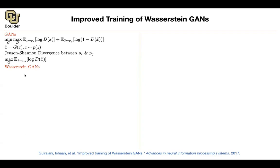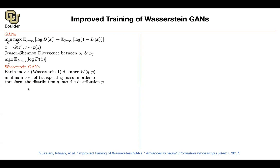This was the Wasserstein GAN. We know it was related to the earth mover distance. The intuition for the earth mover distance, and where the name comes from, is that you are transporting mass from one distribution to the other. You want the minimum cost, and the cost is mass times the transport distance. Mass here is your probability distribution.